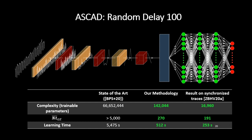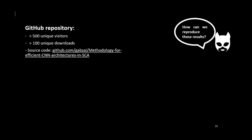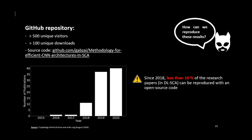If you want to reproduce our results, our source code is available on GitHub, and currently more than 500 unique visitors and 100 unique downloads have been recorded. This shows a heavy demand for open-source code in deep learning-based side-channel analysis. However, over the last 5 years, while the number of papers dedicated to deep learning side-channel approaches increased significantly, only 10% of research papers published open-source code for reproducible experiments. We deeply encourage all researchers to promote the open-source approach.